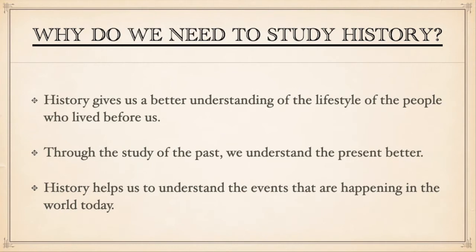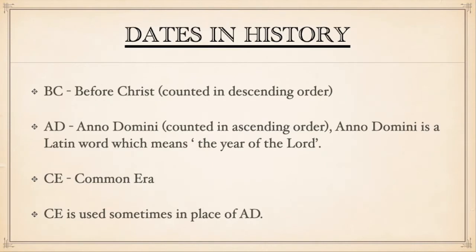Now, to begin the study of history, first of all we have to know the time frame. All dates before the birth of Christ are counted backwards, i.e., in descending order, and dates after Christ are counted in ascending order. BC stands for 'Before Christ,' counted in descending order. AD stands for 'Anno Domini,' counted in ascending order. Anno Domini is a Latin word which means 'the year of the Lord.' CE stands for 'Common Era' and is sometimes used in place of AD.